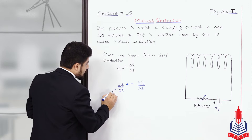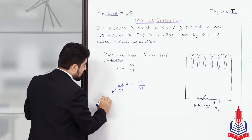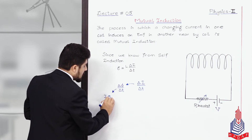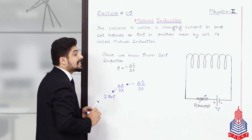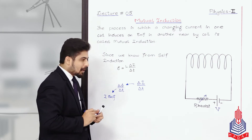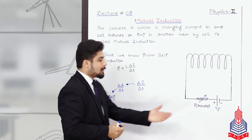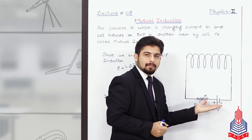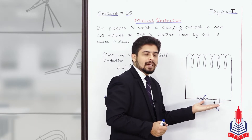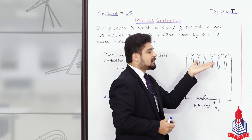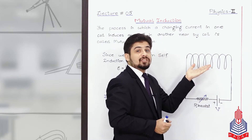And this changing magnetic flux, according to Faraday's law, will give rise to an induced EMF, which we call EMF. Because one of the things that is an EMF source is a battery. But here, there is an EMF generated by changing current.